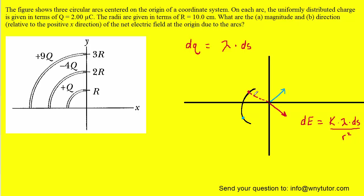If we extend an imaginary line from the origin to that first differential charge, we would have an angle that we could symbolize as theta. And because this angle here is vertical to it, that too would be theta. We're only considering the x-components of these electric fields, and we can see from the diagram that this x-component would be adjacent to that angle. Therefore, the electric field of that x-component would be the electric field times the cosine of angle theta. So we have to add cosine theta to our differential electric field expression.